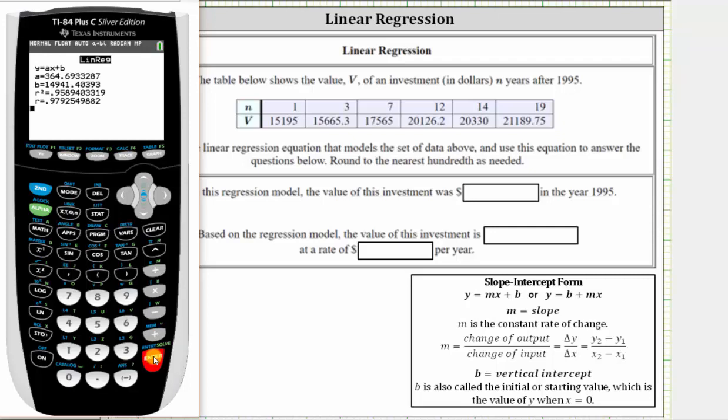We are told to round to two decimal places. So a, which is really the slope, is approximately 364.69. And b, the vertical intercept or initial value, is approximately 14,941.40.